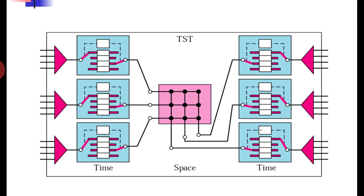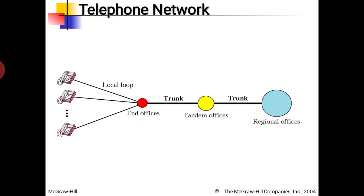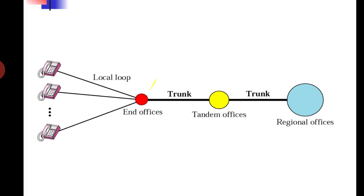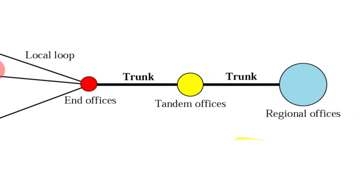The hybrid approach uses TST — time, space, time — switching. This is how telephone networks are structured: local loop, trunk, and regional office levels. The red, yellow, and blue colored points represent switches at exchanges. Their function is call setup and providing a dedicated path for the duration of the call.